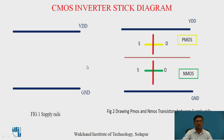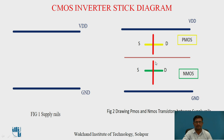We will take the example of the stick diagram for the basic building block of CMOS logic — the CMOS inverter. First, draw the power supply rails VDD and ground as shown in figure 1, and keep sufficient space between these power rails so that we can draw the PMOS circuit and NMOS circuit. Then draw the demarcation line exactly at the center to separate out the PMOS and NMOS circuits.